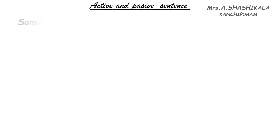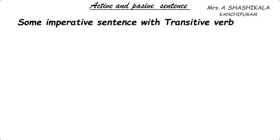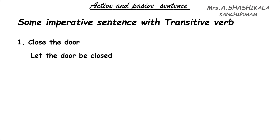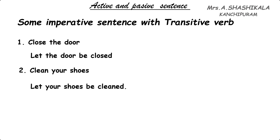For imperative sentences with a transitive verb, we use 'let'. Example: 'Close the door.' Here 'the door' is the object, making it a transitive verb. The passive form is: 'Let the door be closed.' Another example: 'Clean your shoes.' The passive is: 'Let your shoes be cleaned.' The formula is: let + object + be + verb 3.